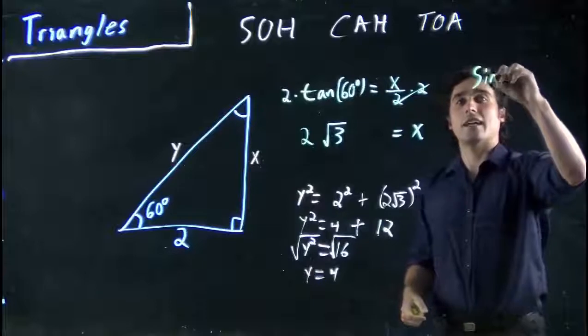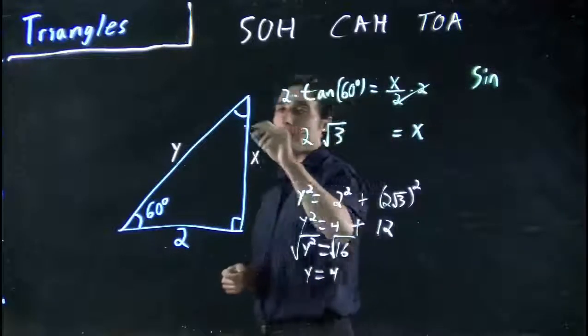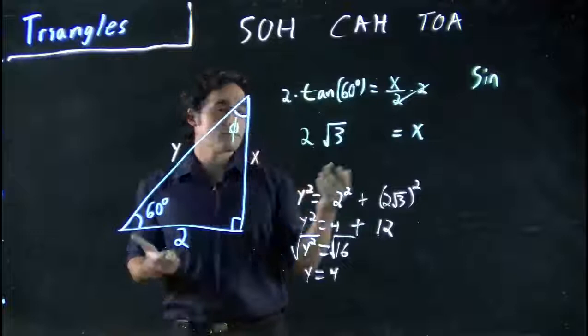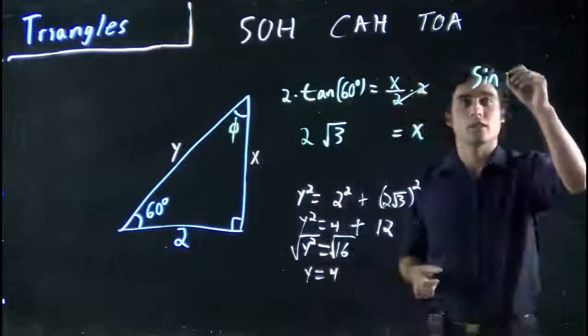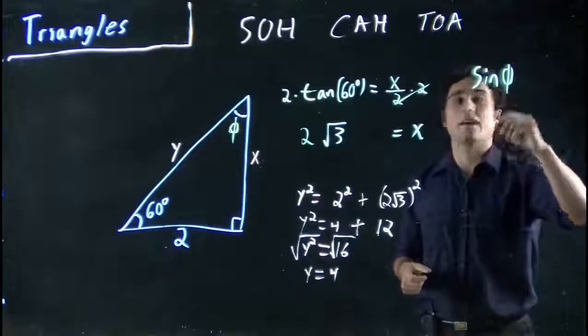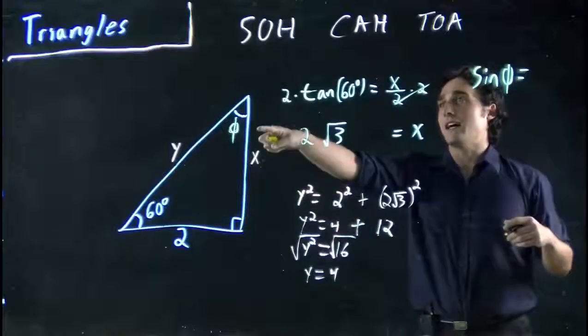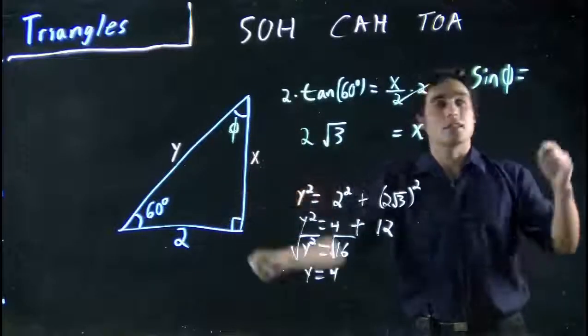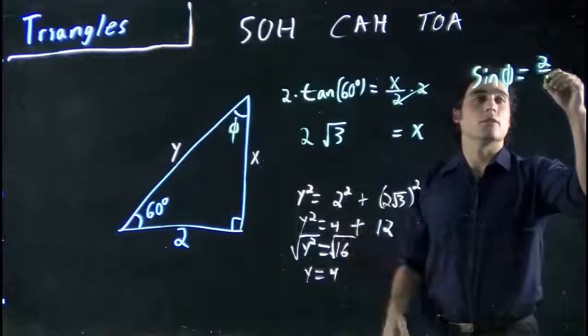So, I can write sine of, ooh, never defined what this is, I'll call it phi, whatever symbol I want to use. It's just a place order, because I don't know what this is yet. Well, sine of this is going to be opposite, so 2 over hypotenuse, 4.